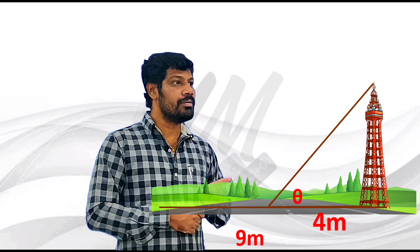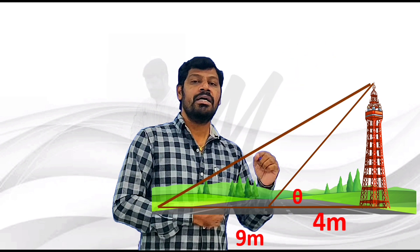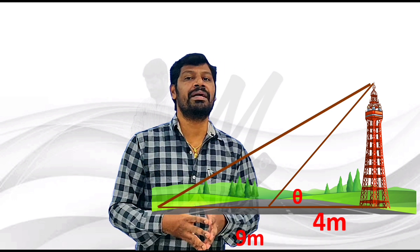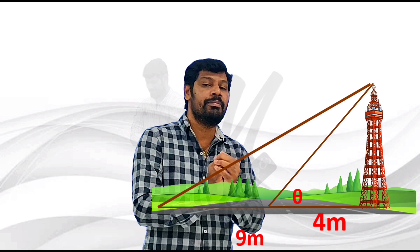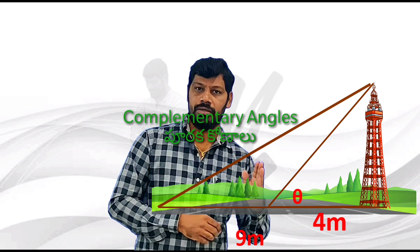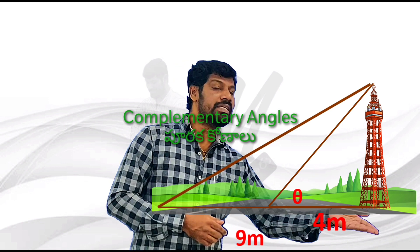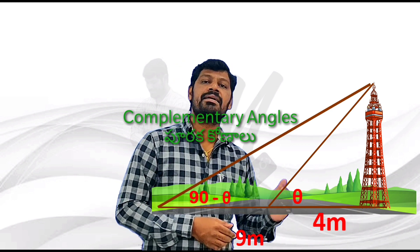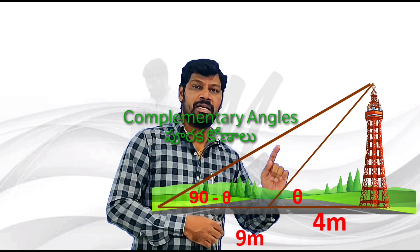From the bottom of the tower, 9 meters above the top of the tower, the angle of elevation is complementary. Complementary means two angles that together make 90 degrees. So we assign one angle as theta and the other as 90 minus theta.